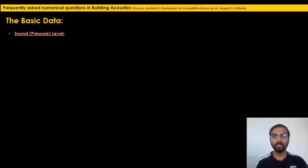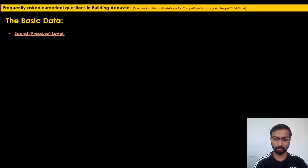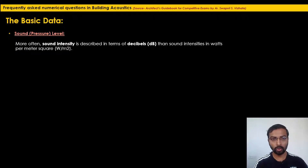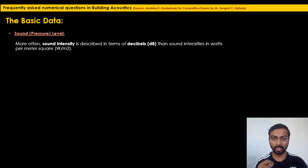The first definition is sound pressure level — we often drop the word 'pressure' and just call it sound level. It is described in terms of decibels (dB). Note that sound intensity is measured in watts per meter square, whereas sound pressure level is measured in decibels — these are different quantities.